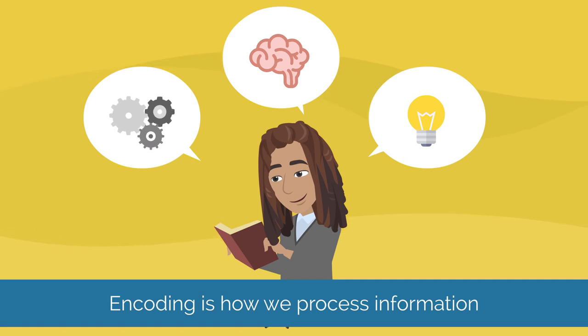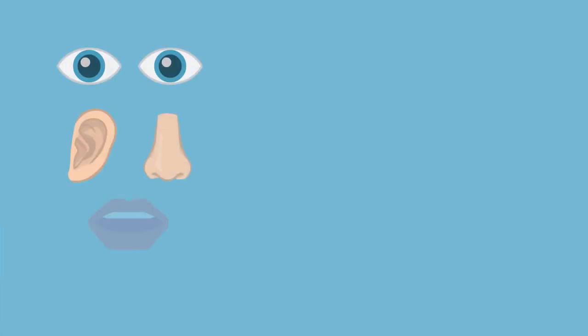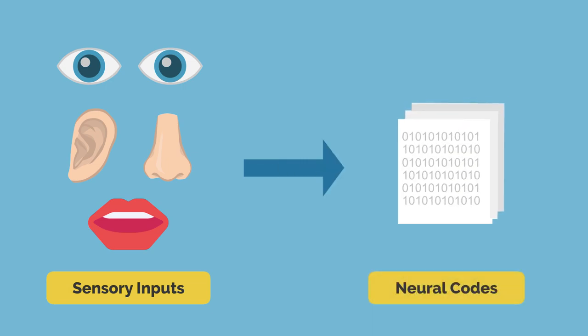It is the way in which we process information. Encoding involves converting sensory inputs such as sight, sound, and smell into neural codes.